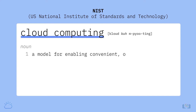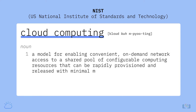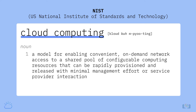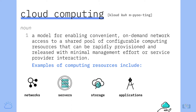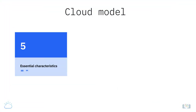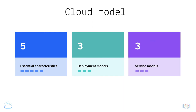NIST defines cloud computing as a model for enabling convenient on-demand network access to a shared pool of configurable computing resources that can be rapidly provisioned and released with minimal management effort or service provider interaction. Examples of computing resources include networks, servers, storage, applications, and services. This cloud model is composed of five essential characteristics, three deployment models, and three service models.